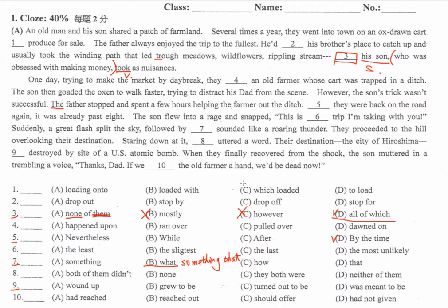好，來，接下來第九題。Their destination 我們從這邊開始看。Their destination, the city of Hiroshima, turned out to be destroyed. 因為講的是結果，它們的目的地——在還沒翻過那座山頭的時候，半空中有閃光、有聲音，等到看到的時候，結果 turned out to be destroyed，be動詞要記得，被摧毀了。